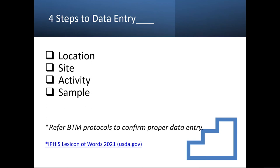IFIS is a one-directional application. You have a location, then a site, then an activity, then a sample if you collect one. We have a link for the IFIS Lexicon of Words where you can read the proper definitions for these different sections. Always refer to your Box Tree Moth protocols for the proper data entry or naming conventions.